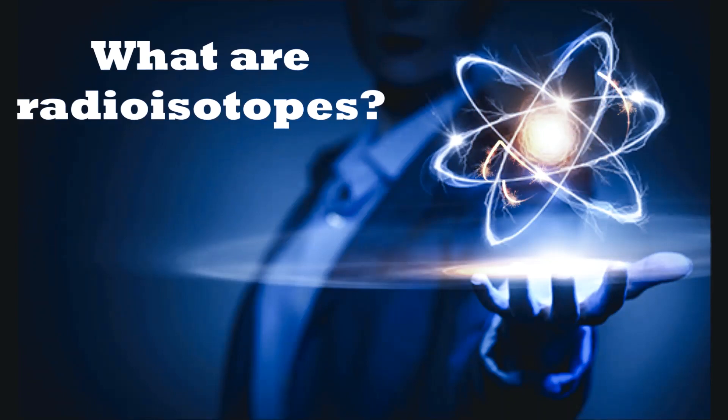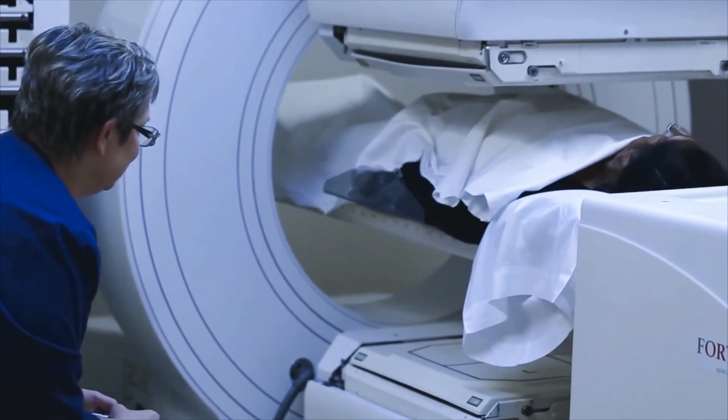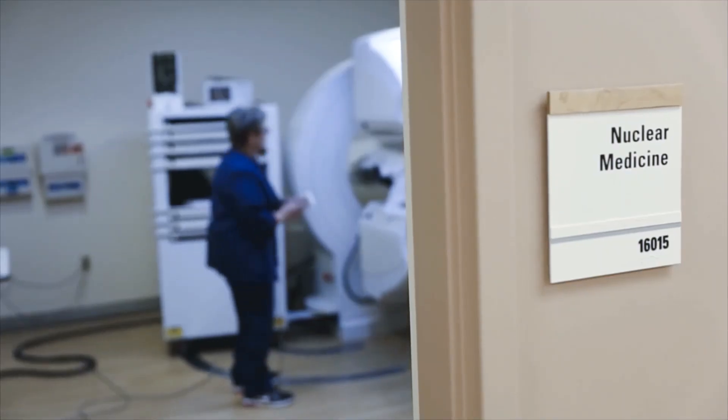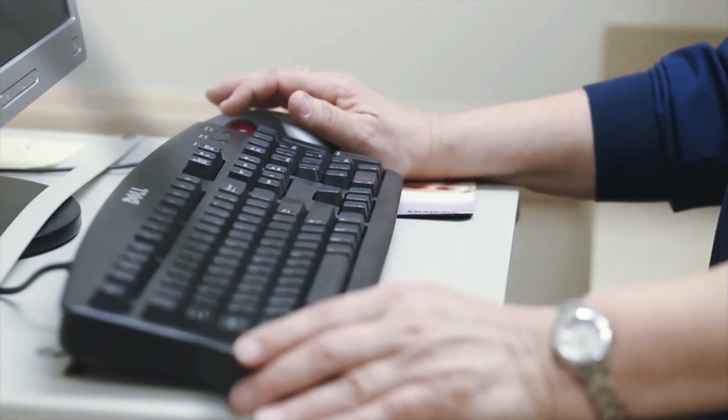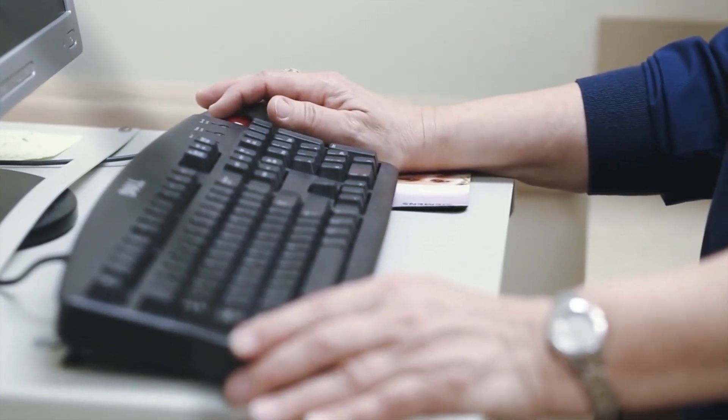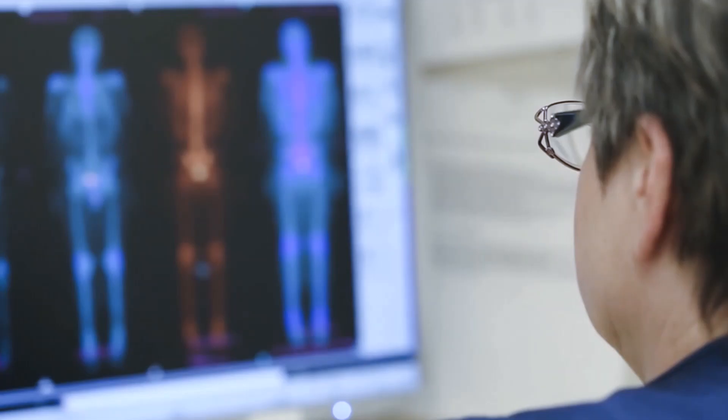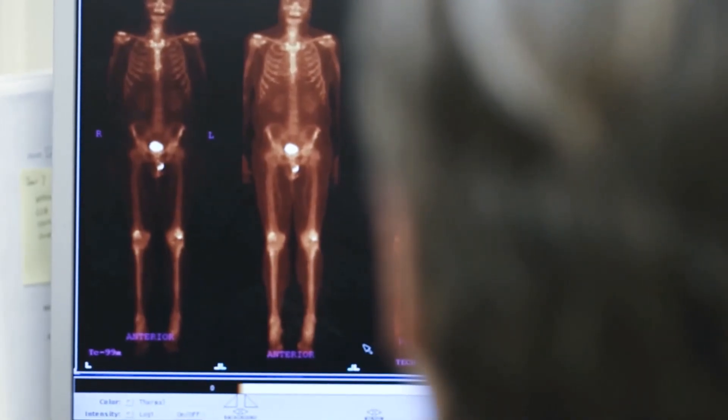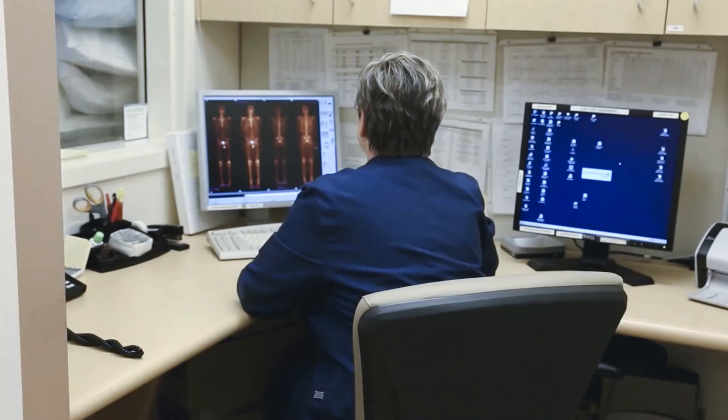Radioisotopes are the unstable form of an element that emit radiation to transform into a more stable form. Radiation is easily traceable and can cause changes in the substance it falls upon. Nuclear medicine uses radiation to provide diagnostic information about the functioning of a person's specific organs, or to treat them.